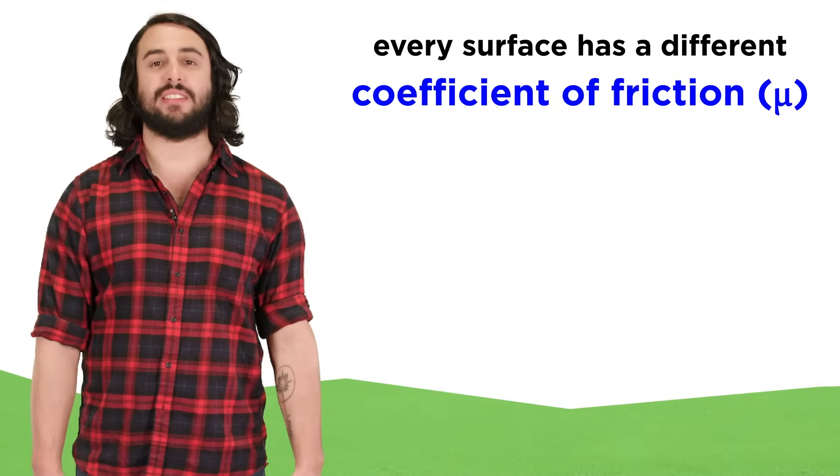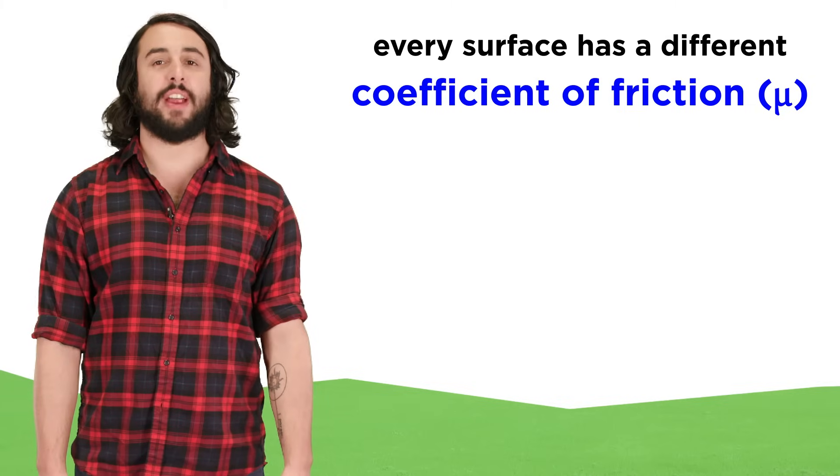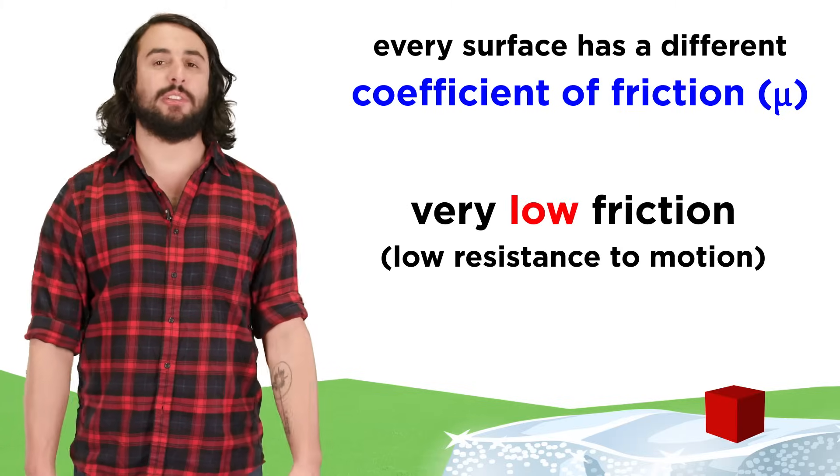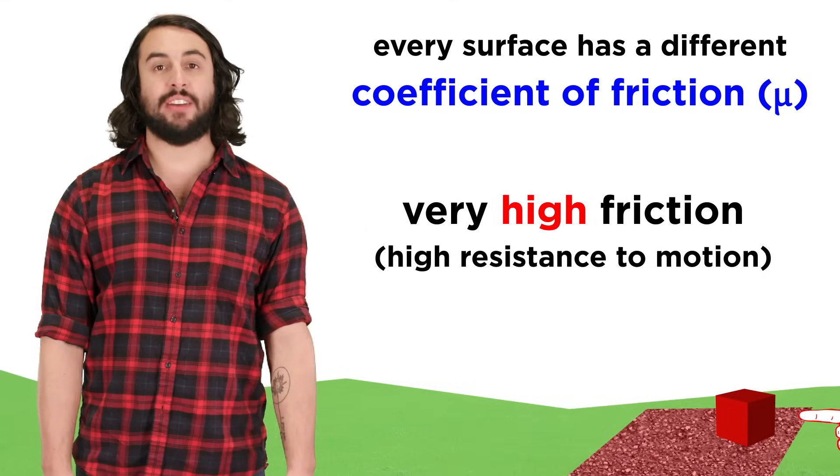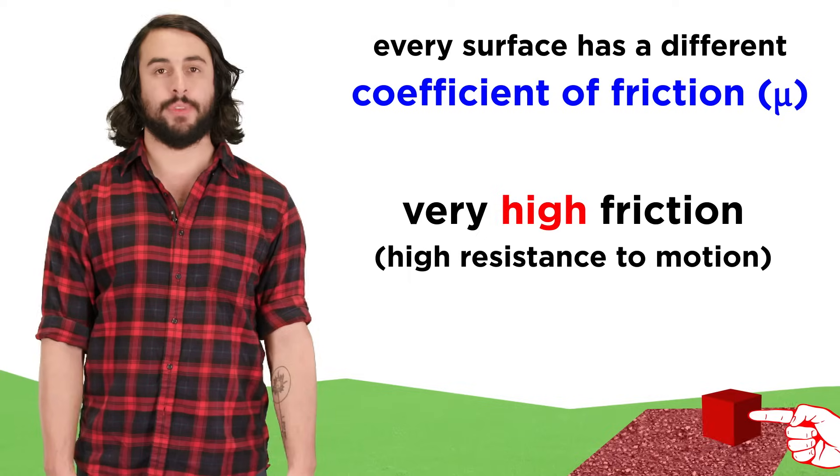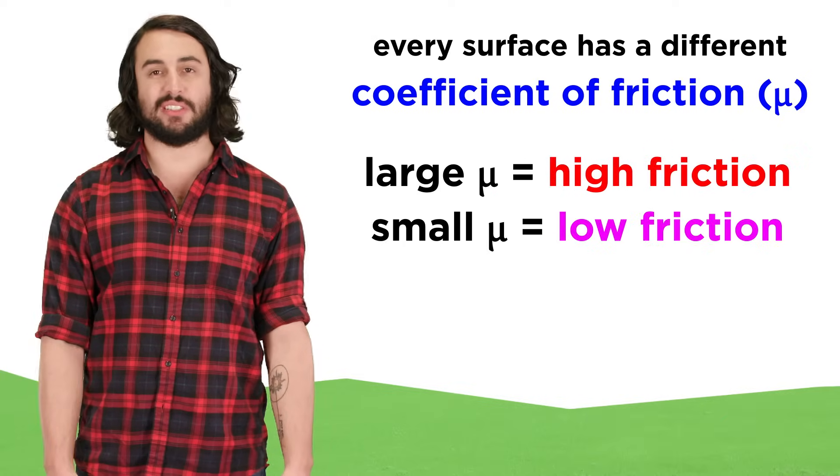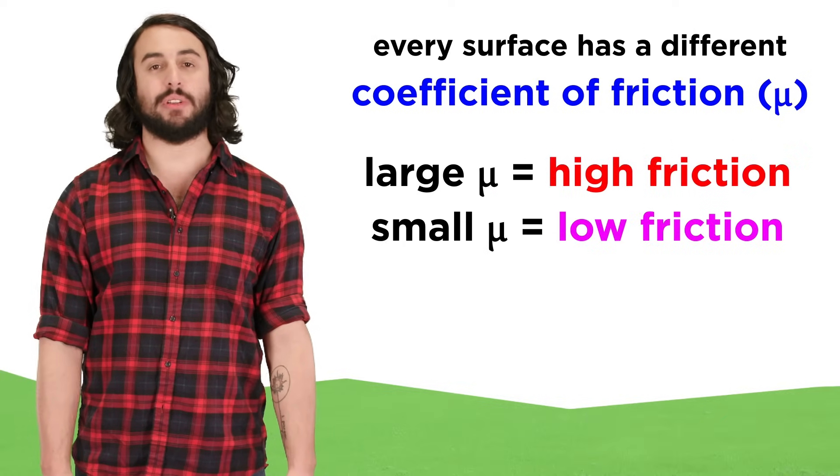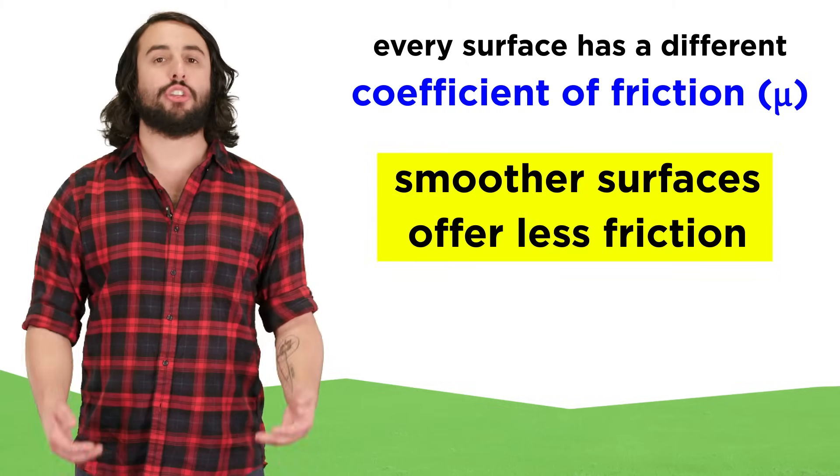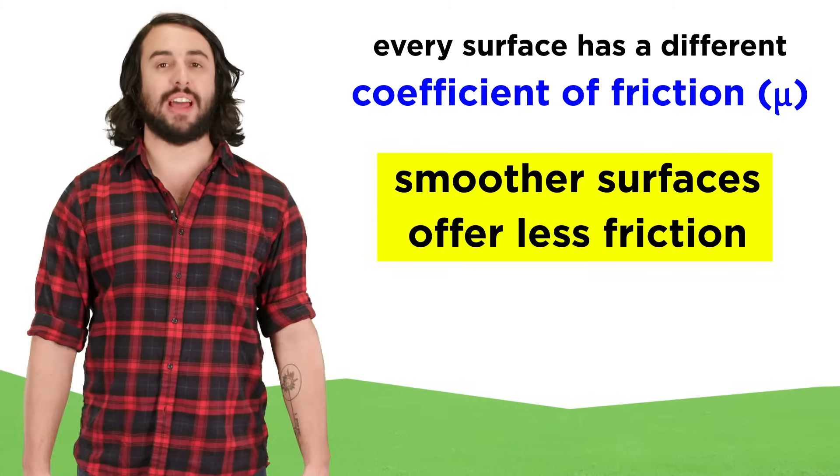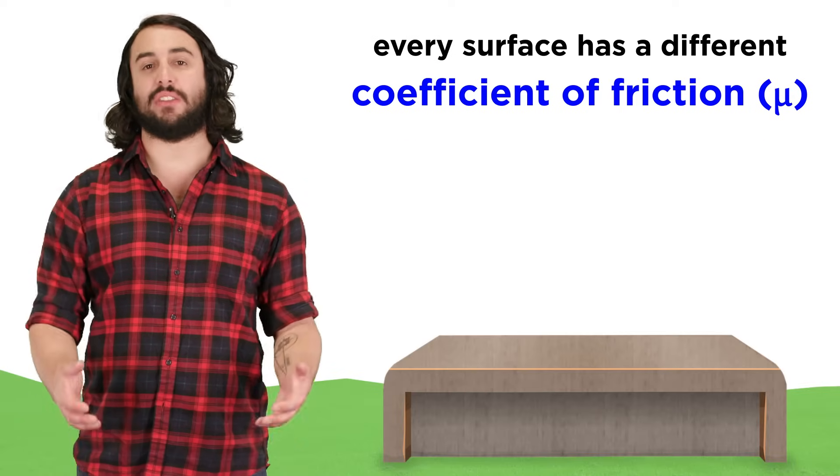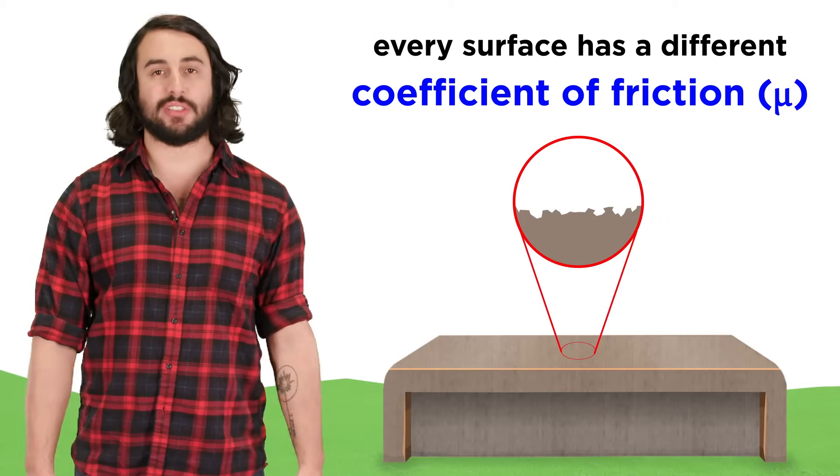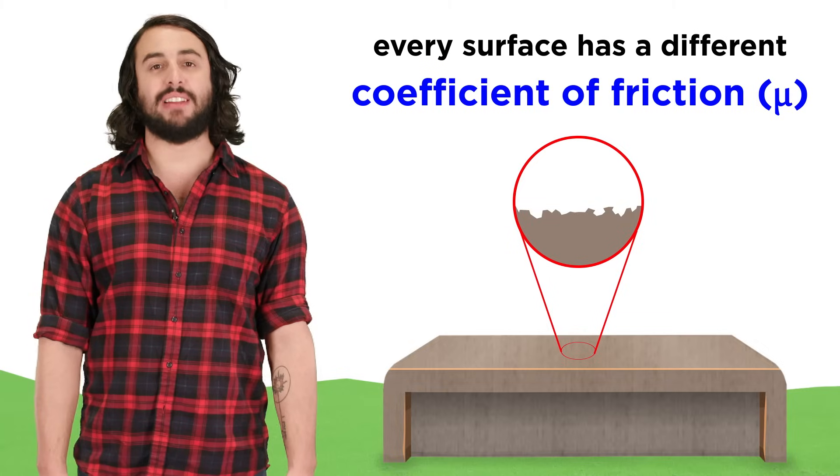Every surface has some frictional coefficient that will vary depending on its composition. To see this demonstrated, try to push a small block across some ice, and then try to push it across some sandpaper. These materials differ in their resistance to motion for reasons that relate to their composition. The smoother a surface is, the less friction it will provide, but even surfaces that appear perfectly smooth will have imperfections on the microscopic level that provide some friction.